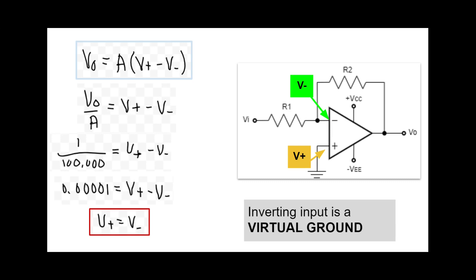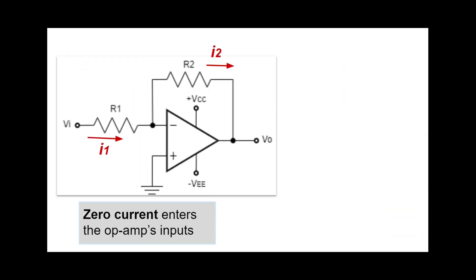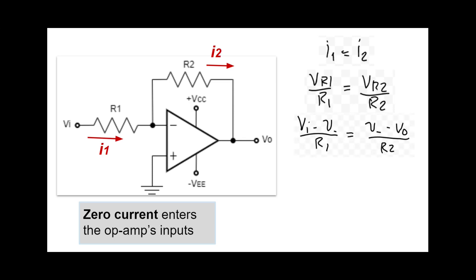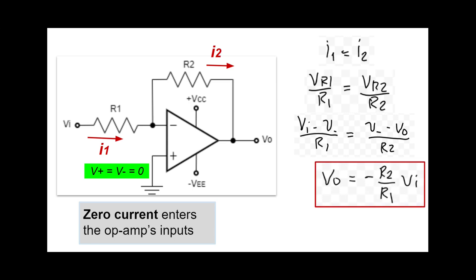The second important fact about the op-amp is that no current enters the inputs. So now, we can imagine that an input voltage causes current to flow through R1, and all of it will continue to R2. By using Ohm's law, we can rewrite this in terms of voltage drops as Vr1 over R1 equals Vr2 over R2. Then, we can replace Vr1 with V in minus V negative, and Vr2 with V negative minus Vo. So, since V positive is equal to V negative equal to 0, when we use that and do some algebraic manipulations, we get the equation showing that for any voltage applied as input Vi, we just multiply it by a negative constant determined by the values of R1 and R2 to get Vo.